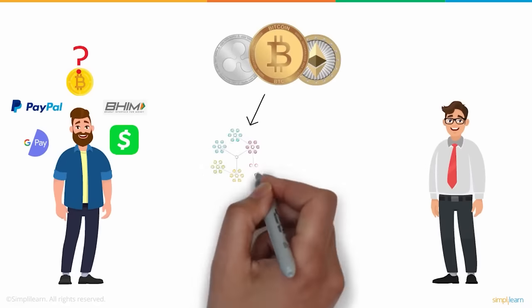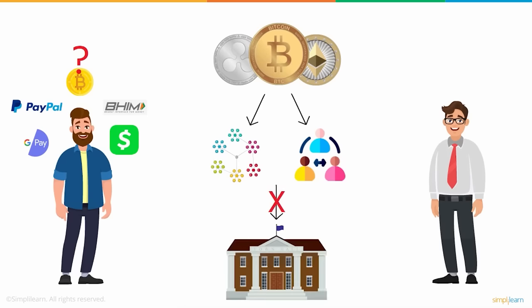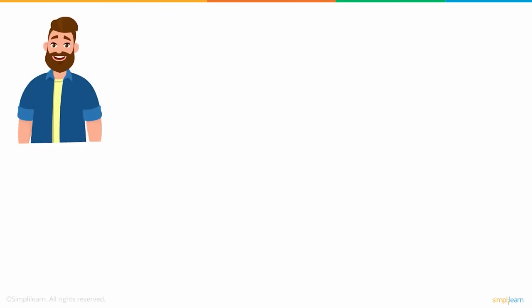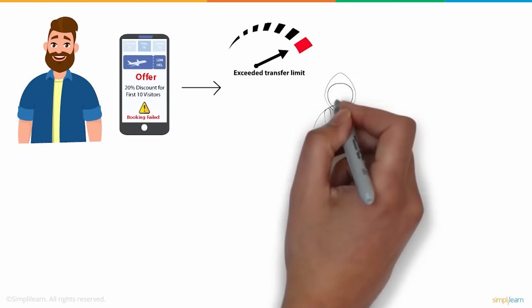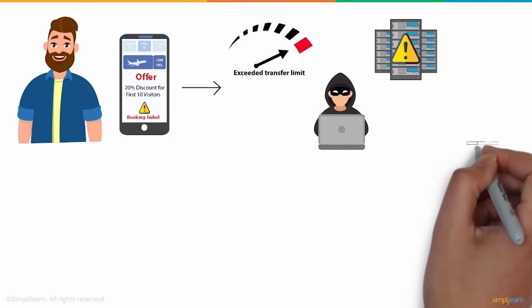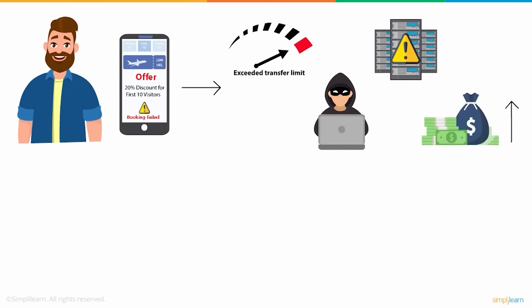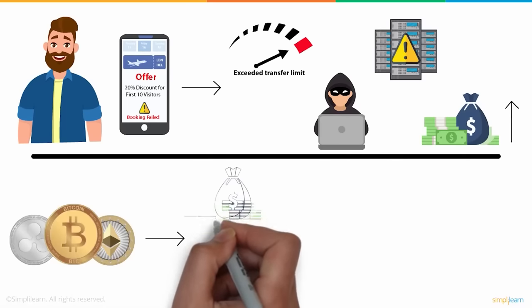Daniel felt it sounded similar to other online payment options and asked what makes it different. Frank explained that cryptocurrency is decentralized and free from any third-party interference — not issued or controlled by any government or central authority, unlike payment systems handled by banks or governments. That's why a cryptocurrency transaction never fails. Daniel's transaction could have failed because he exceeded his transfer limit, his account was hacked, or there was a technical issue with his bank server.